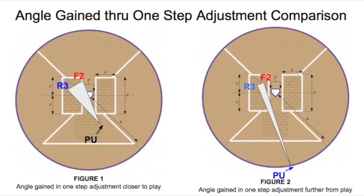As the wedge continues to evolve, many question the five to seven feet target distance and debate whether or not that distance is too close to the play. The diagram here gives us a visual to help explain. The reason umpires should maintain a five to seven feet distance from the catcher is because the angle gained in a one-step adjustment, also known as quiet steps, is far greater than if umpires were positioned further from the play.